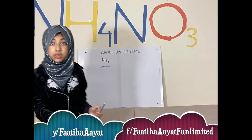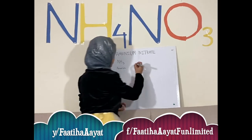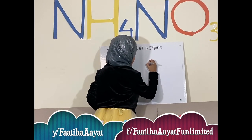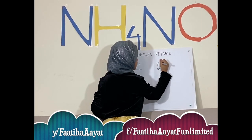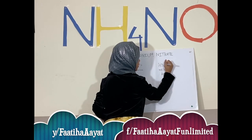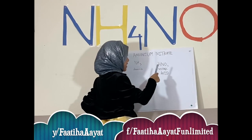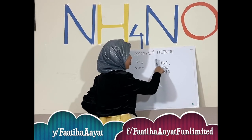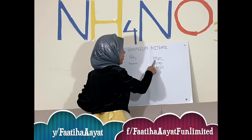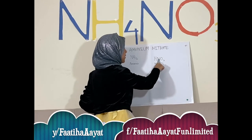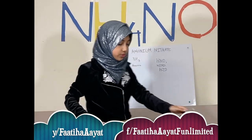Now I'm going to show you the nitric acid, which is another molecule, which includes HNO3. This means that in one molecule of nitric acid, there is one atom of hydrogen, one atom of nitrogen, and three atoms of oxygen. I will also show you that in real life.